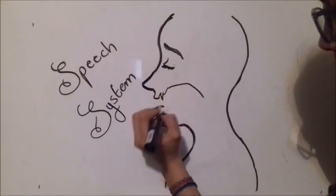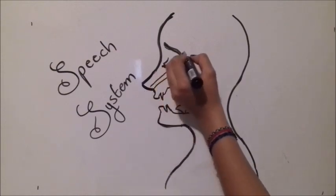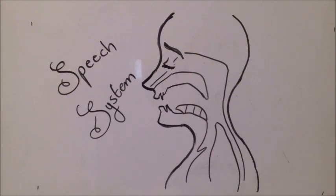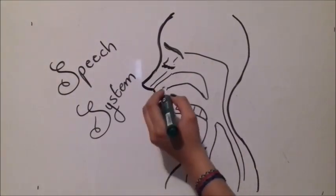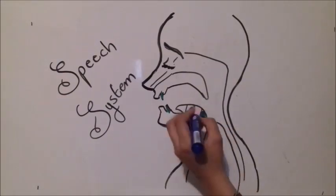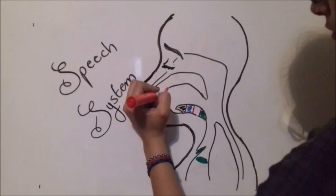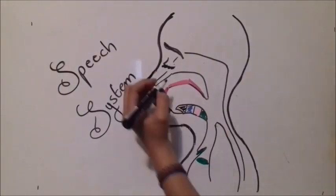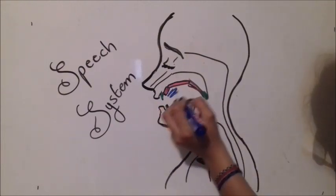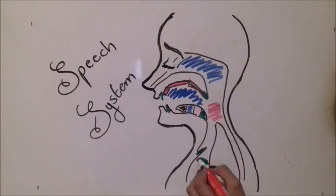The speech system is a series of organs we use to produce the sounds. Here we have the lips, then the epiglottis and glottis, the teeth, the root of the tongue, the back of the tongue, the front and the tip of the tongue. Then we have the alveolar, the hard palate and the soft palate, the uvula, the oral cavity, the nasal cavity and the pharynx.